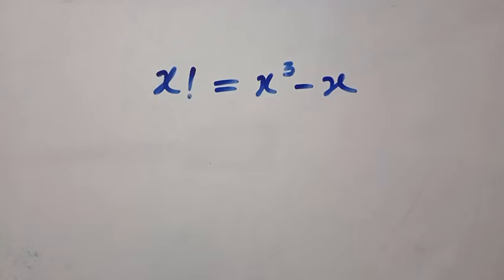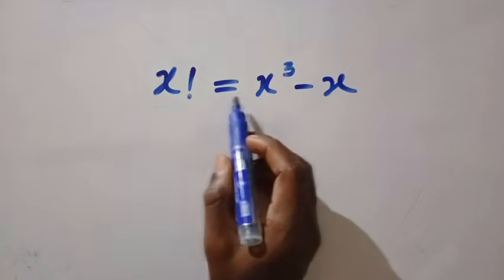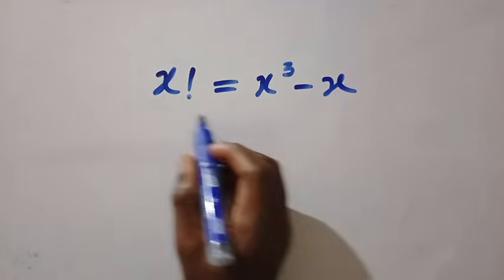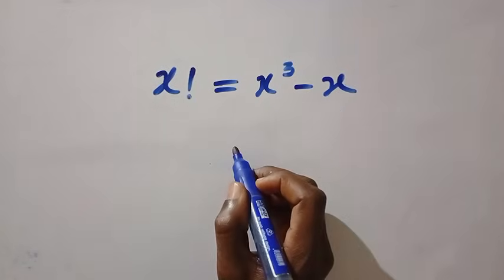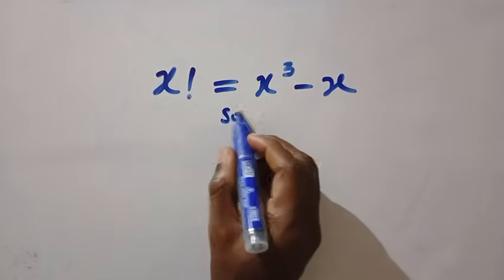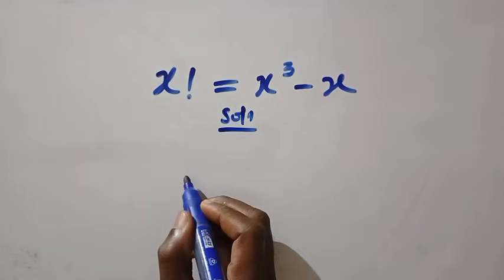Good day viewers, you are welcome. How to solve this nice algebraic equation? We are given x factorial equals x cubed minus x, where x is a member of an integer. So to get the value of x, consider the solution from here.